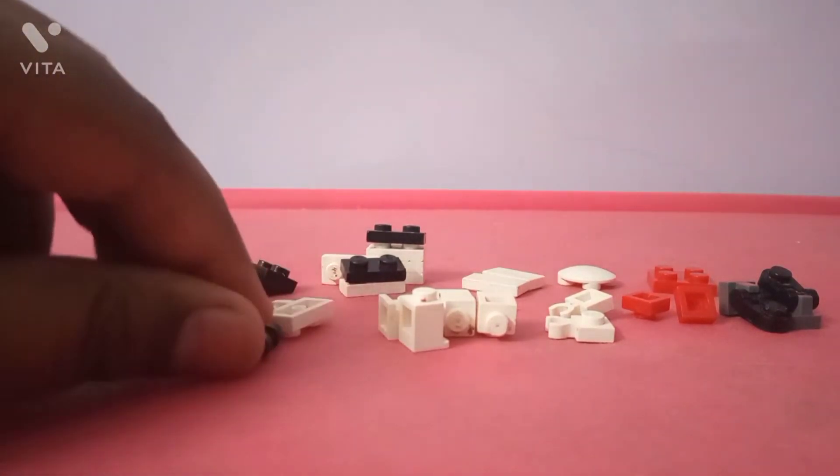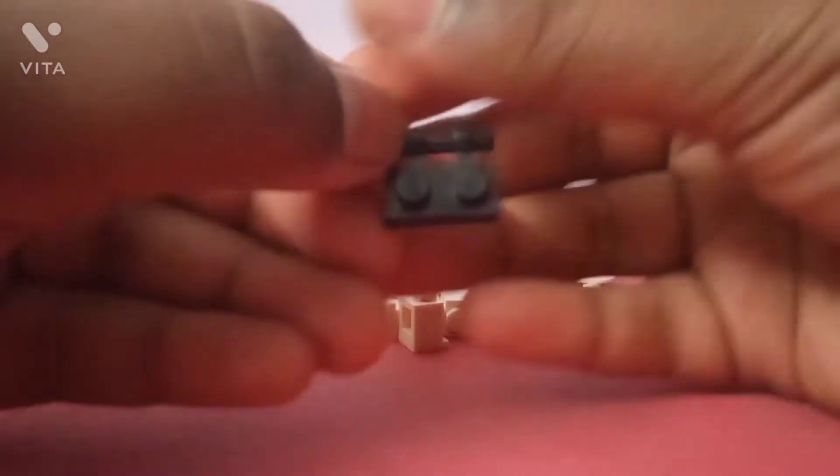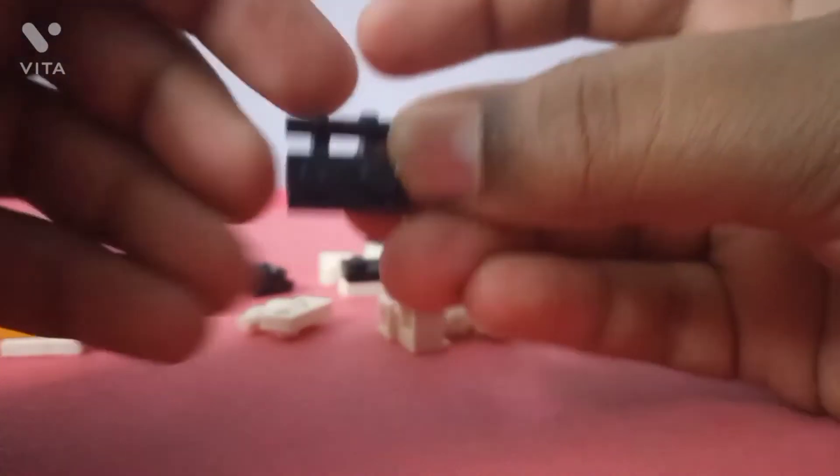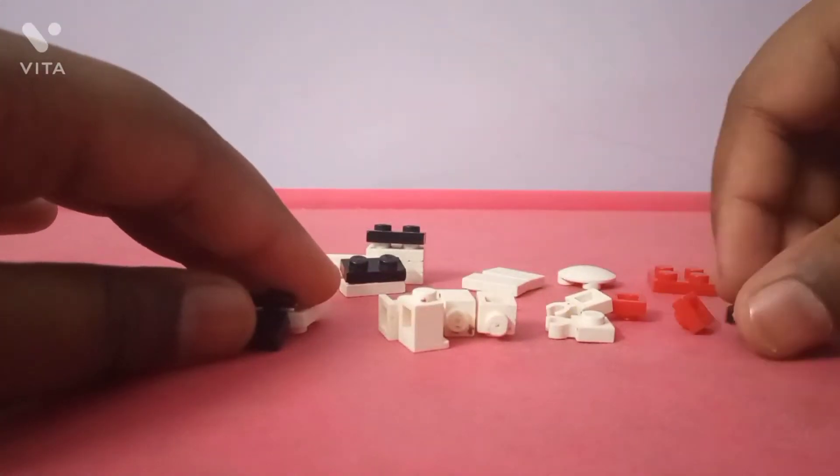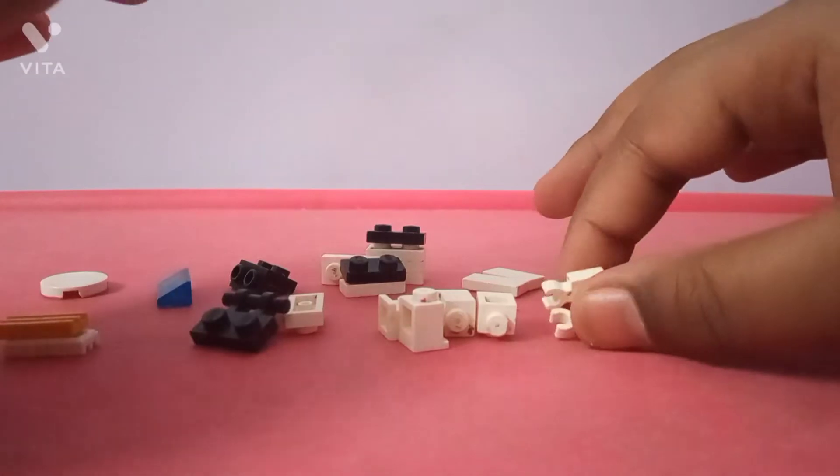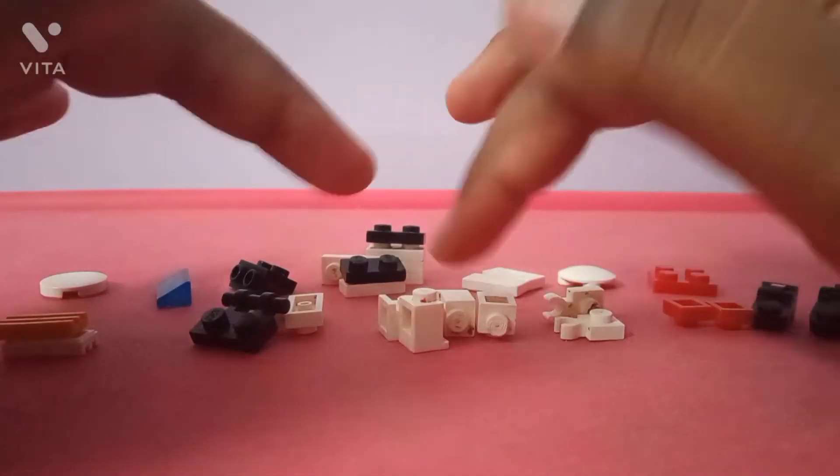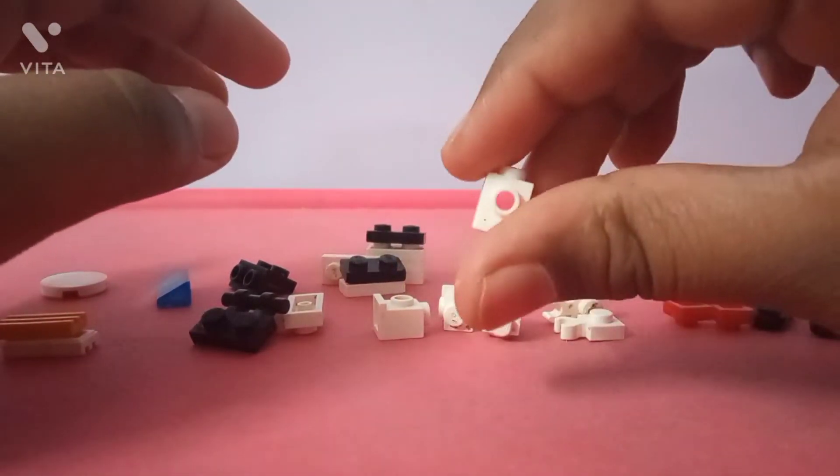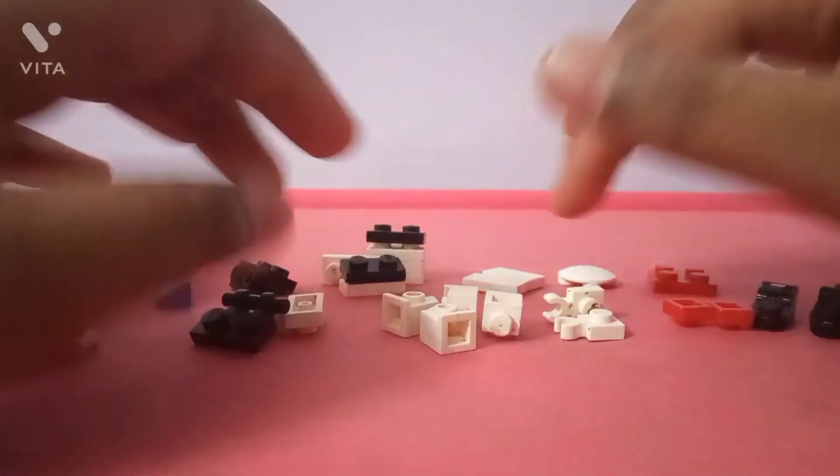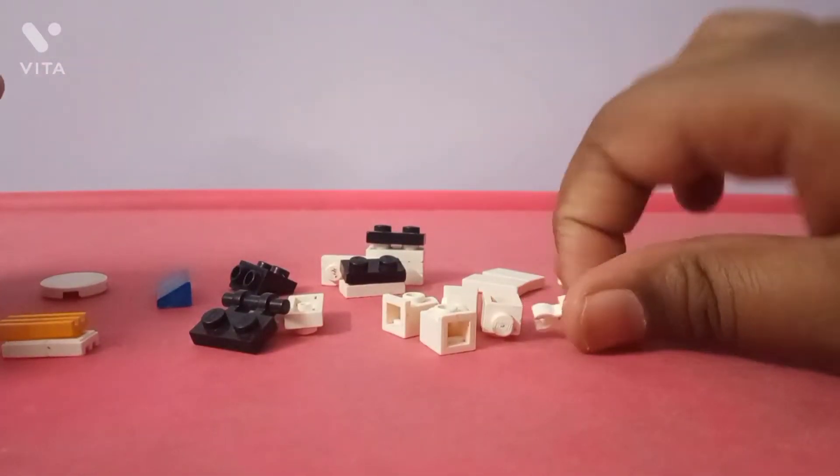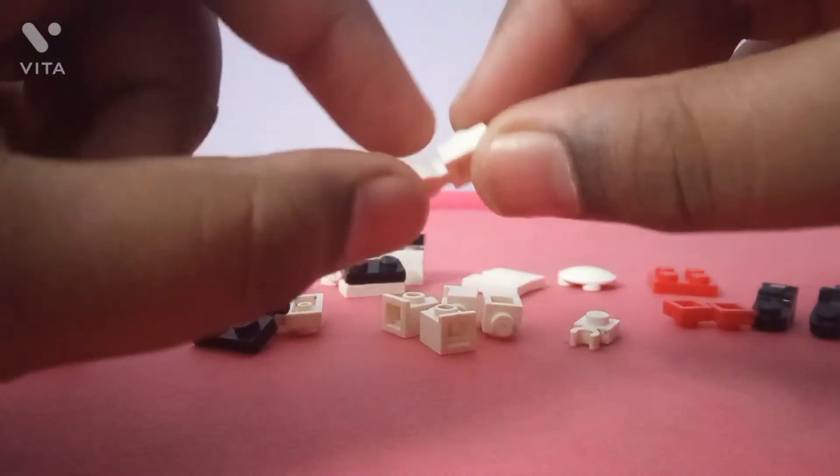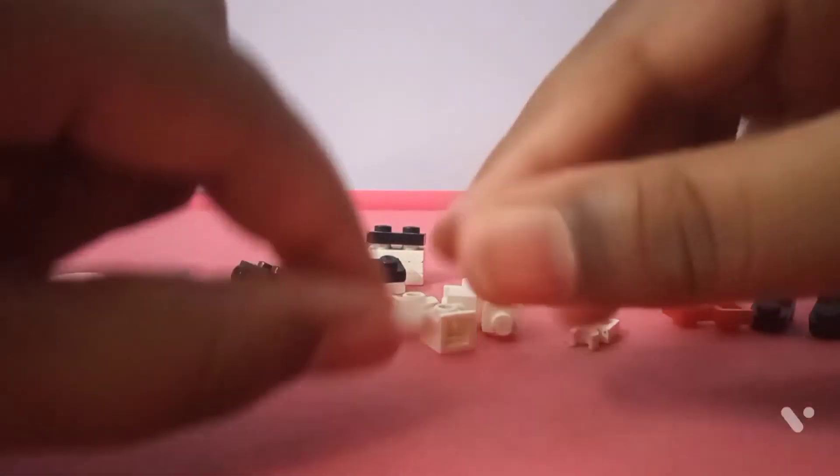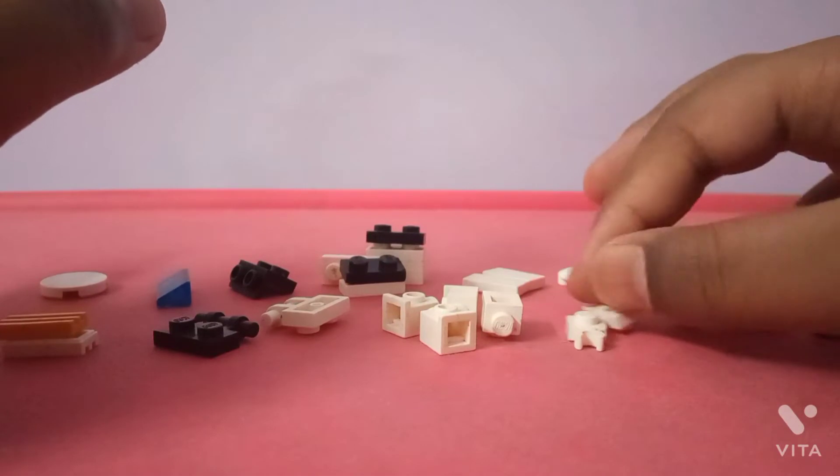Then you need these 1x2 pieces with a bar, with these little holding things. Then you need four 1x1 headlight bricks. And then you need two 1x1 clips, whatever they are called.